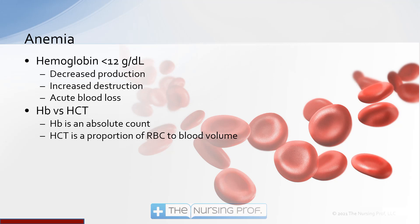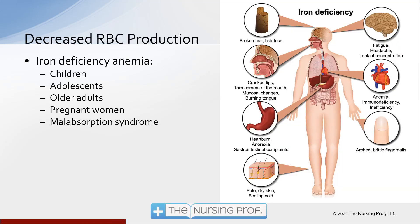I want to differentiate between hemoglobin and hematocrit. Hemoglobin is an absolute count of hemoglobin in the blood, whereas hematocrit is a proportion of red blood cells to blood volume. So hematocrit is going to change with blood volume — if a patient is dehydrated or overhydrated, that will cause changes in hematocrit, whereas hemoglobin should remain relatively stable.